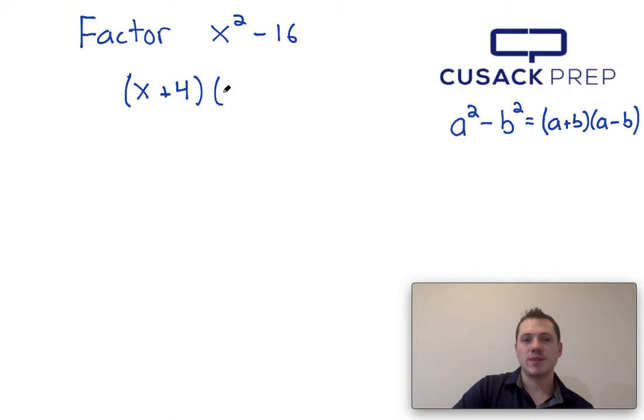So x squared minus 16 factors into x minus 4 times x plus 4 via the difference of squares. Thank you for watching!